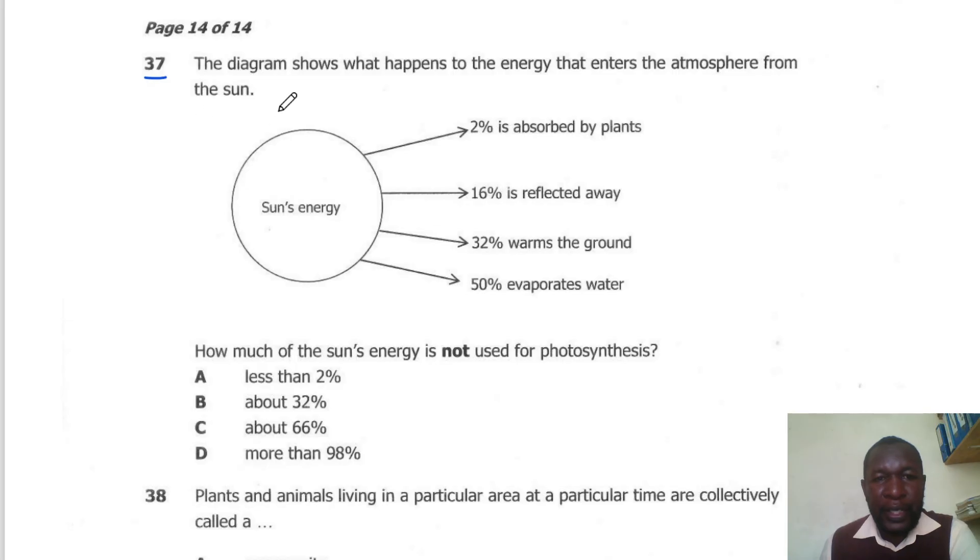Question 37. The diagram shows what happens to the energy that enters the atmosphere from the sun. How much of the sun's energy is not used in photosynthesis? Only a small amount of light is used for photosynthesis. Only 2% is absorbed by the plants. But again, of this 2%, some of it will not be used because part of the light which is used for photosynthesis is a lower spectrum. So here the correct answer is D. More than 98% is not used for photosynthesis. If you have a different opinion, you can leave it in the comment section below.